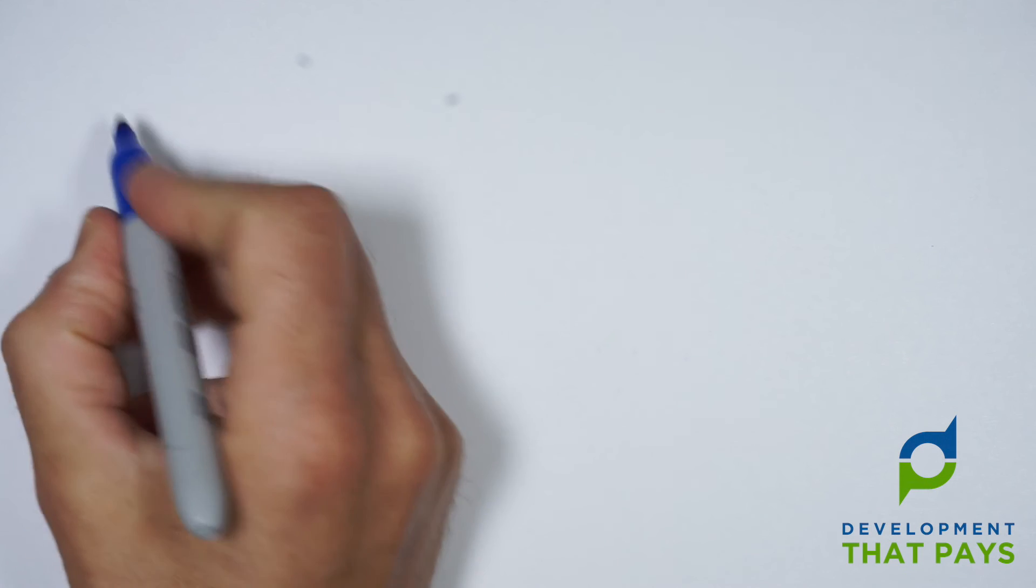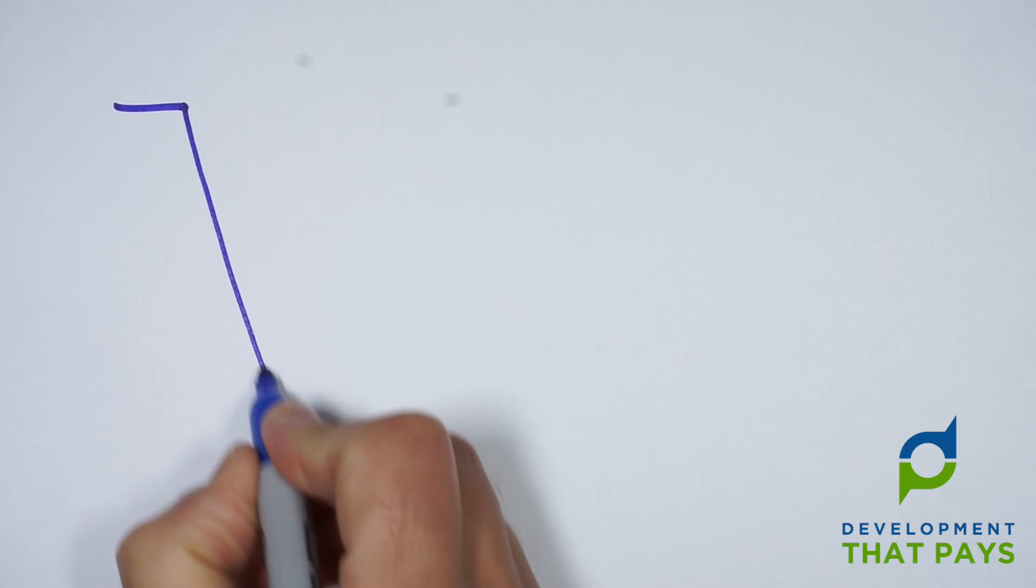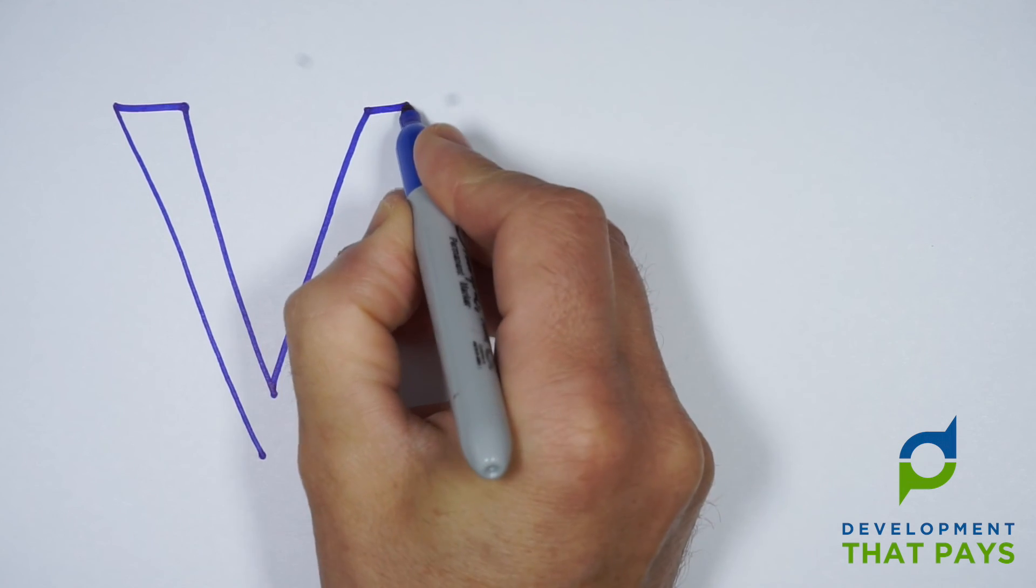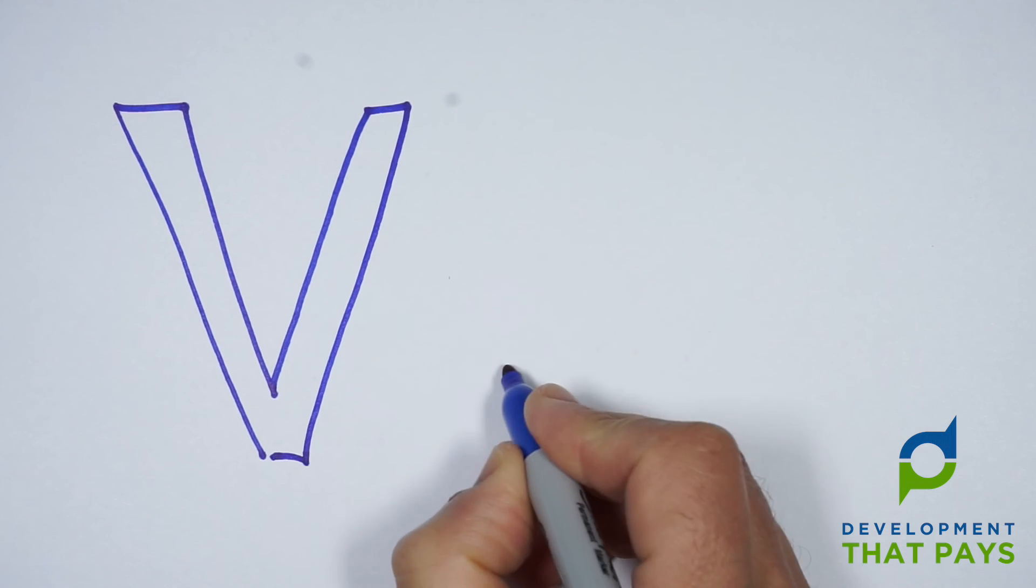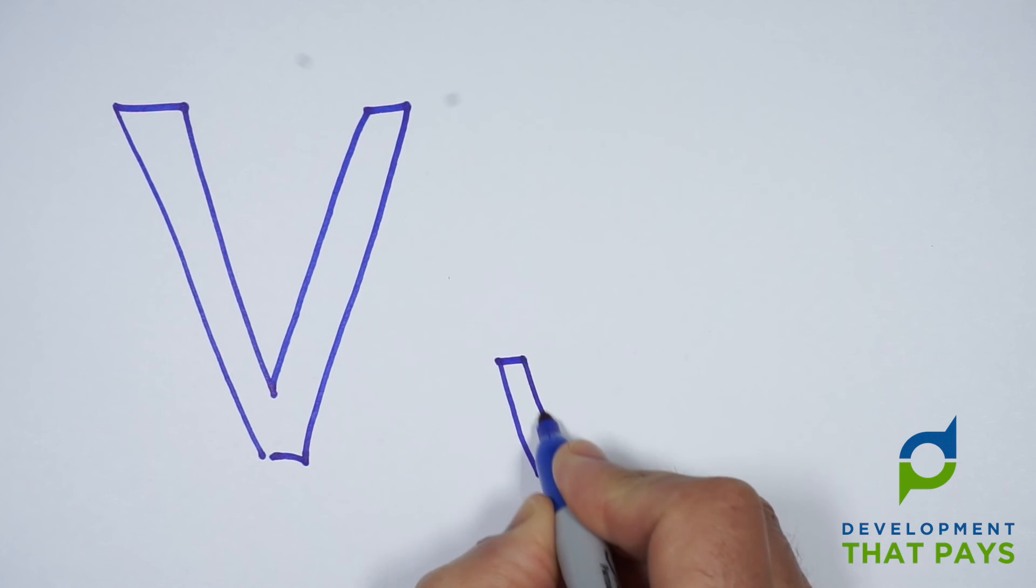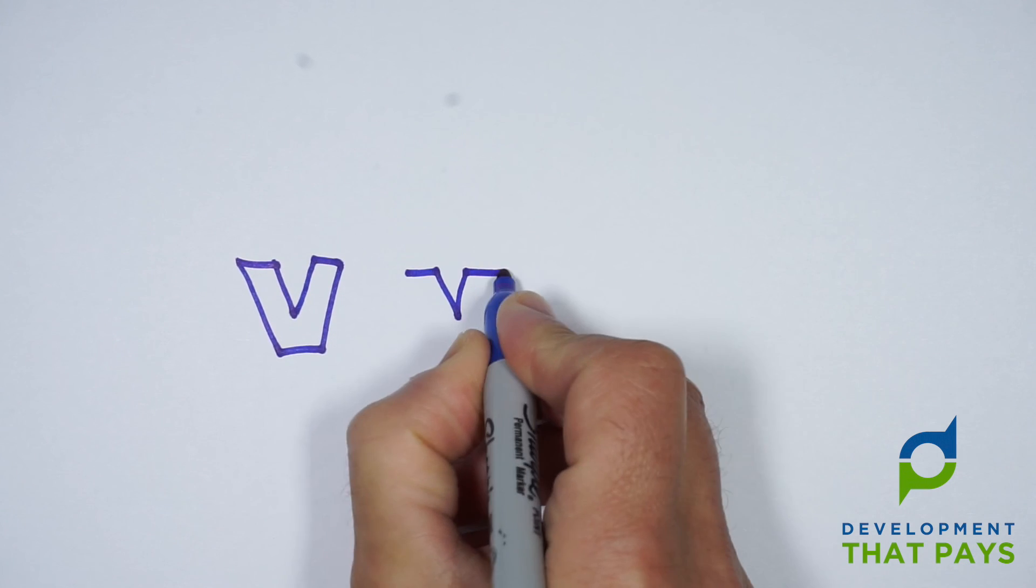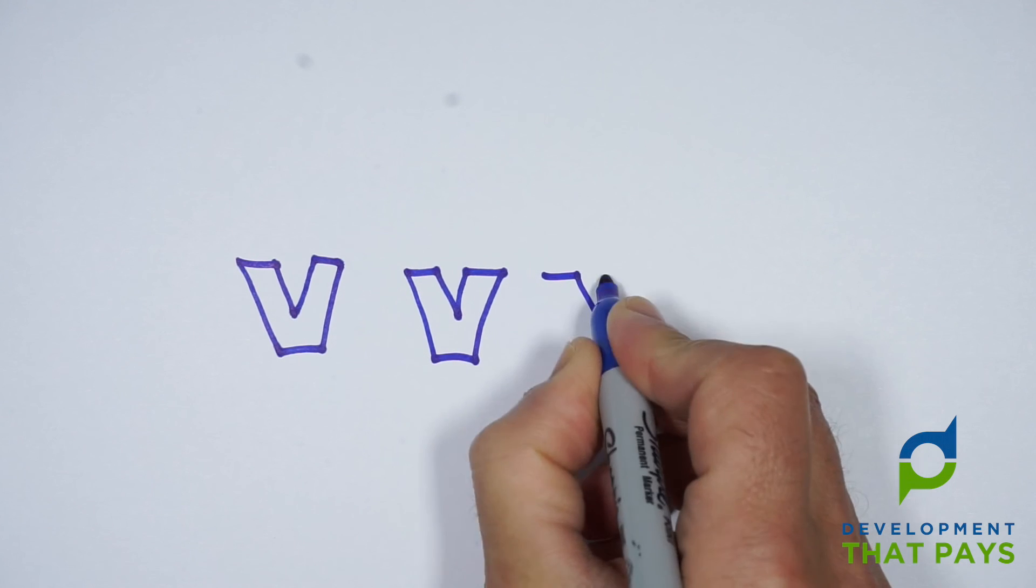So I have a question for you. Now that you know that, which of these projects would you rather take responsibility for? This huge imposing V on the left or the small and perfectly formed V on the right? Safer, I think, to do lots of little Vs than one big huge V.